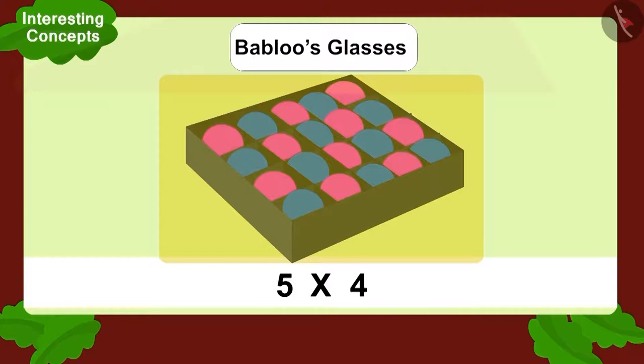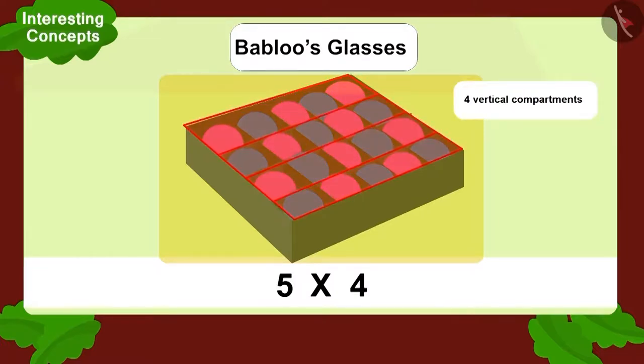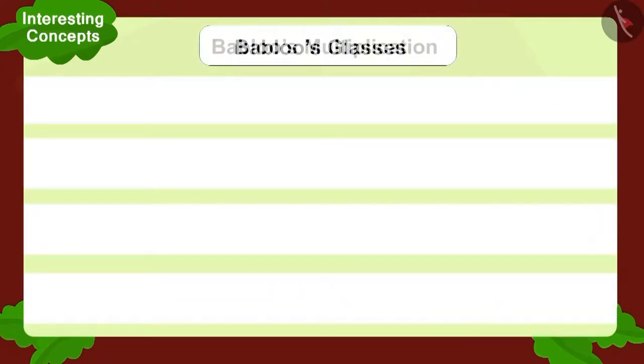Come, now let's look at Bablu's multiplication. Here, Bablu saw four big compartments and five balls in each compartment. Five multiplied by four.